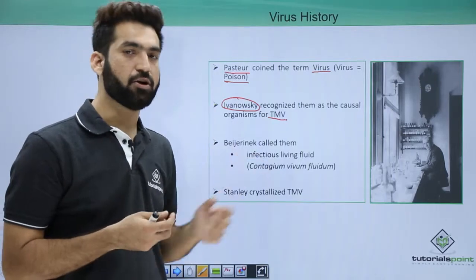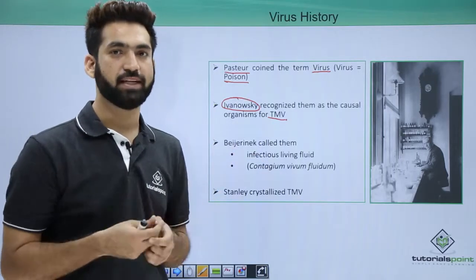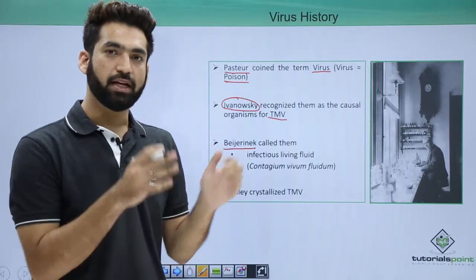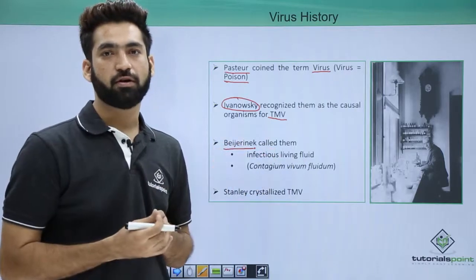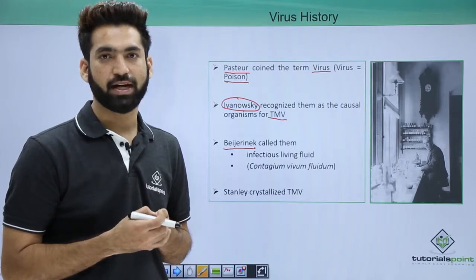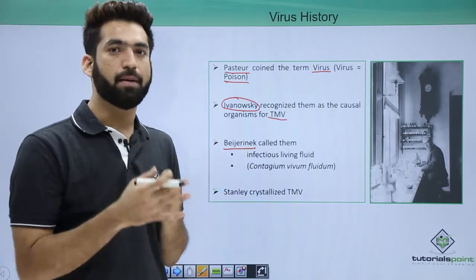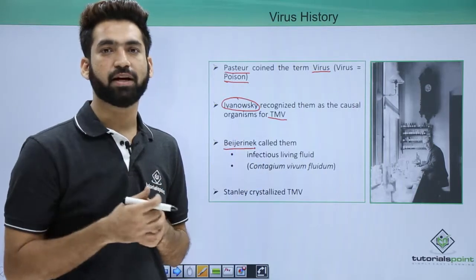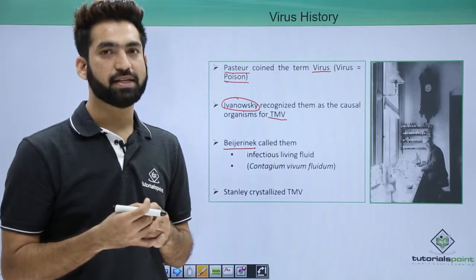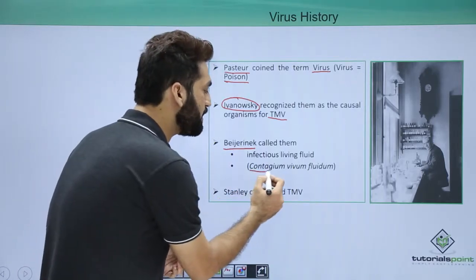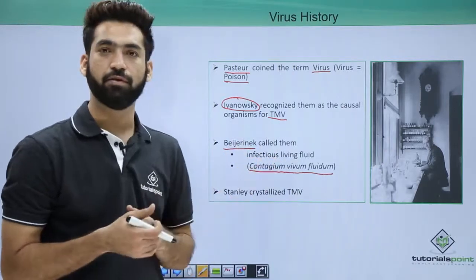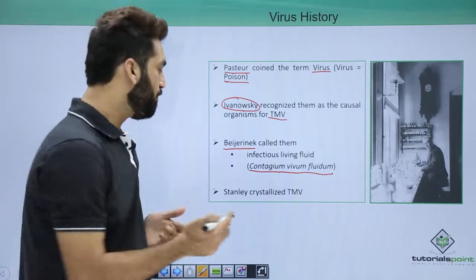Ivansky also found that viruses were able to cross bacterial filters. Remember, viruses are smaller than bacteria, so they can easily cross bacterial filters. The third important scientist, Beijerinck, took the cellular sap from infected tobacco with TMV and gave it to a healthy plant, which then suffered from the same disease. He called viruses 'contagium vivum fluidum' — an infectious living fluid which can be transferred.